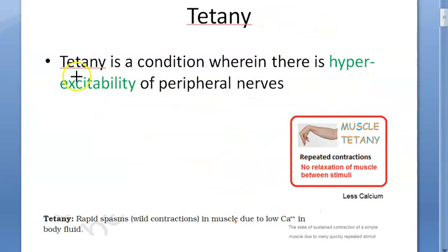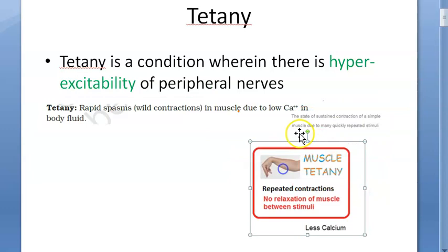So this is tetany — a condition wherein there is hyperexcitability of the peripheral nerves, rapid spasm or contractions of the muscle happen without relaxation of the muscle in between the stimuli.